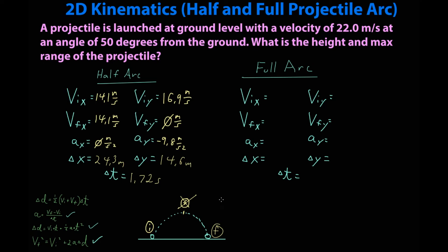For starters, the initial spot has not changed so my initials are still the same: 14.1 meters per second and 16.9 meters per second. VFX, there's no acceleration on the x-axis so VFX is 14.1 meters per second still. VFY is no longer zero because we're not at the top of the arc anymore. Acceleration on the y is still the same so these have not changed. Time will be different. Delta x will be different. VFY will be different and delta y will be different. Are any of these we know?